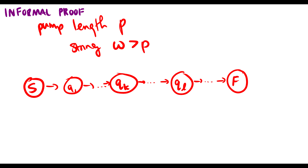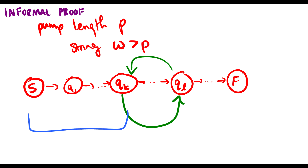Our string is greater than the pump length, so at some point we're going to reach a state that was similar to a previous state. For instance, maybe qk and ql are equal to each other — meaning there's a loop. We can take the portion before the loop to be x, whatever's in the loop to be y, and the remaining bit to be z. If we have a loop, we don't have to do it — we can pump it down — or we can do it more than once, pumping it up. It should still be accepted by the machine because we're going around in circles.